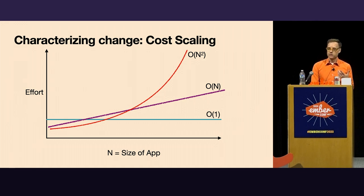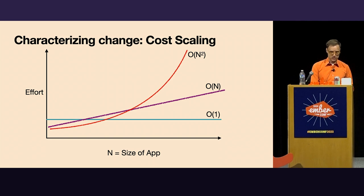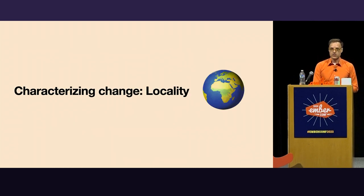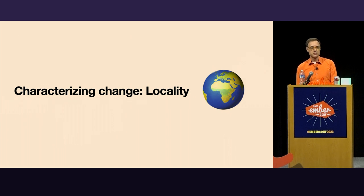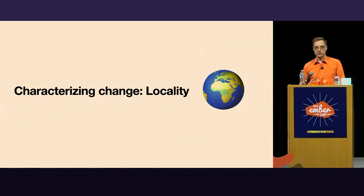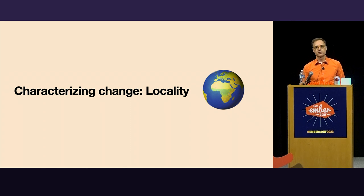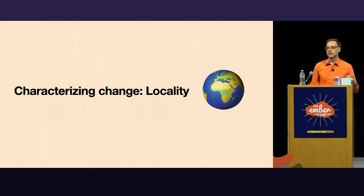That's the first dimension for characterizing change. The second thing I want to talk about is locality of change — some changes are very local and some are very global. Something like upgrading Ember is a global change; you can't upgrade Ember one component at a time, one route at a time. You can't upgrade TypeScript for one module at a time. Those are global changes, so we have to use other techniques to plan very carefully around them. The contrast is changes that have really great locality.